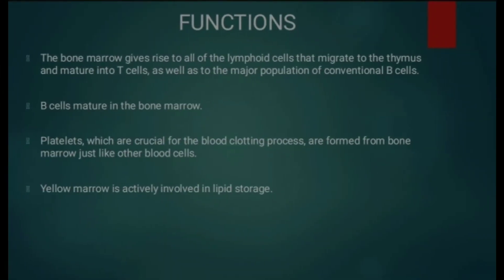Ab baat karte hain functions ki. Bone marrow lymphoid cells ko produce karta hai, phir wo thymus mein migrate karke T cells mein mature hote hain. Second, B cells bone marrow mein mature hote hain. Third, platelets jo blood clotting process mein bahut zyada important hain, wo bhi bone marrow mein form hote hain, jaise ki doosre blood cells. Yellow marrow lipid storage mein help karta hai.